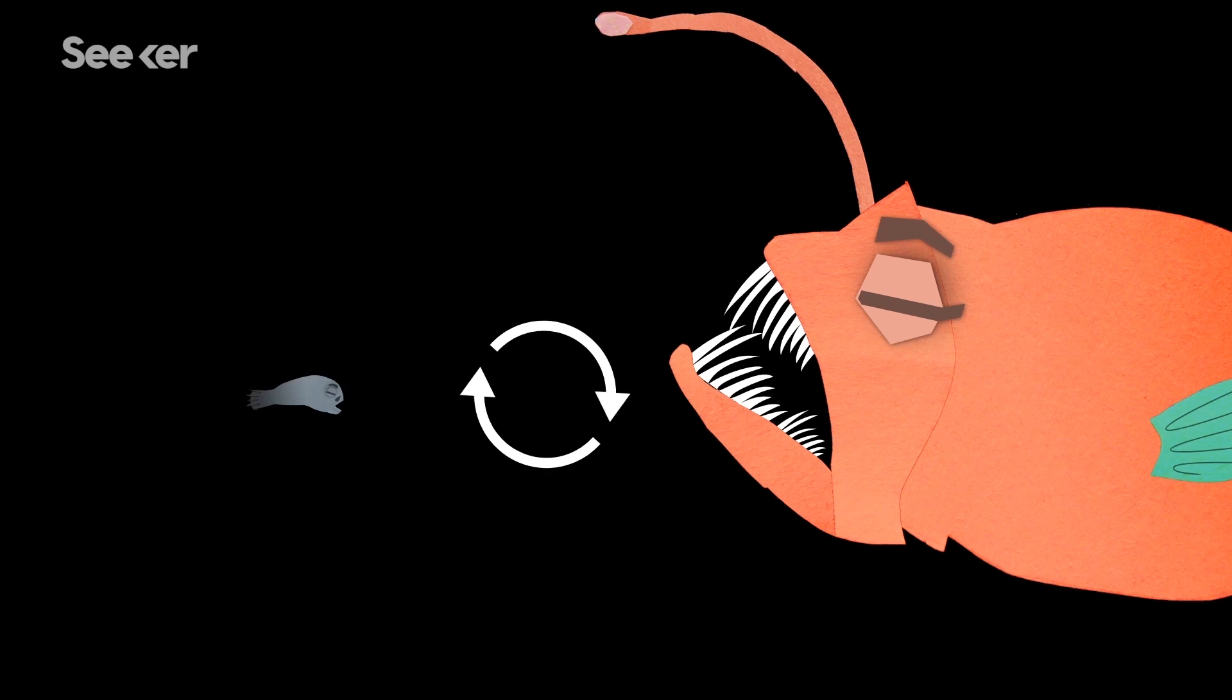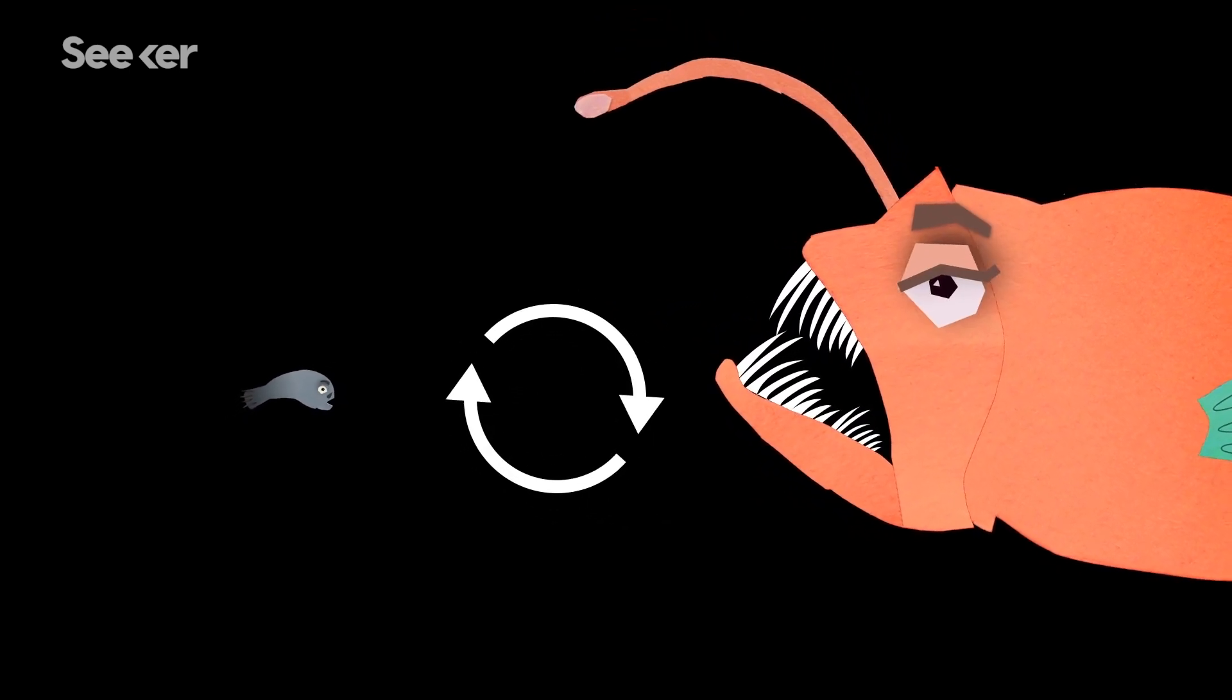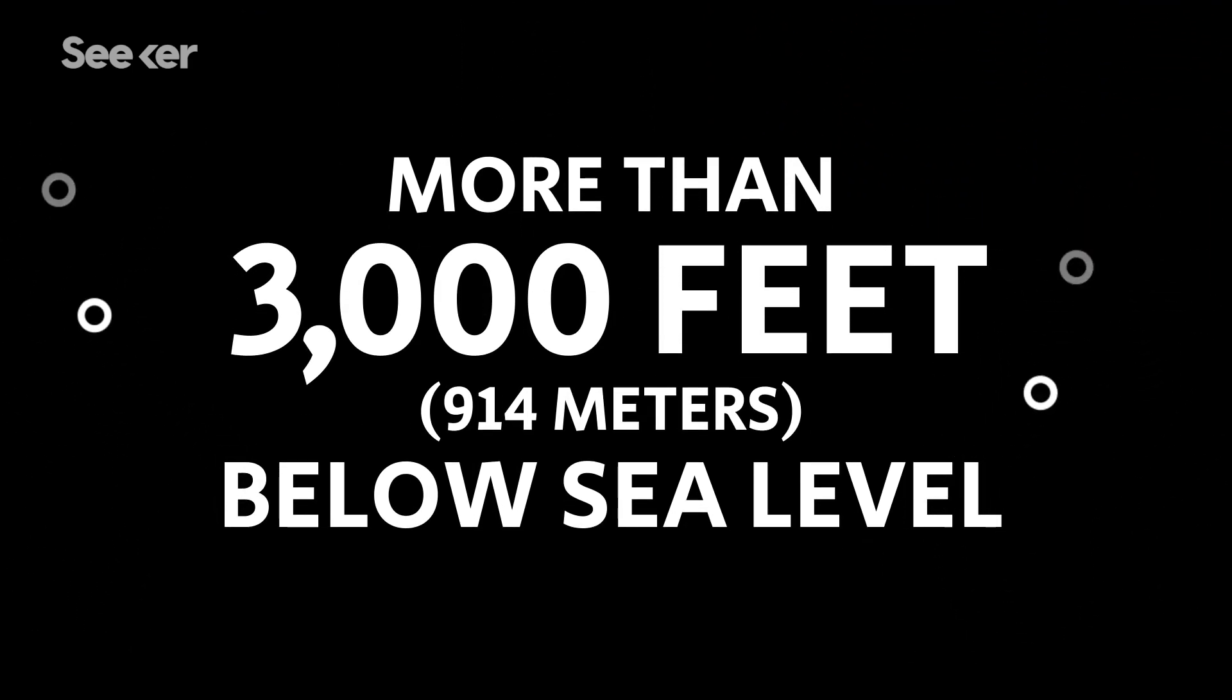Basically, males need females to survive, and females need males to reproduce. But in the vast darkness and depths of the open ocean, finding each other can be an almost impossible task.